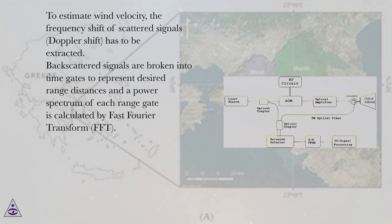To estimate wind velocity, the frequency shift of scattered signals, Doppler shift, has to be extracted.